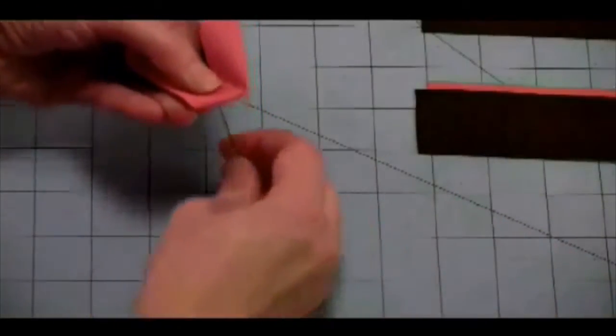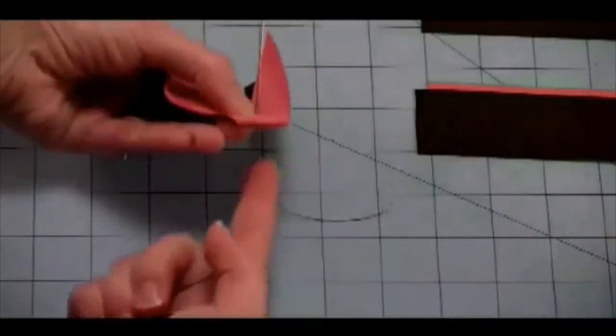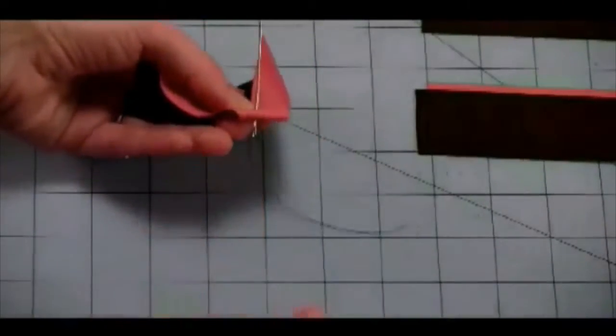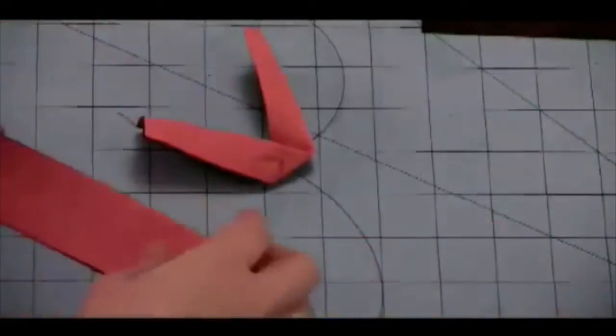I'm going to take this, put our needle right through the center there, getting all the layers, and put it down to the end of the needle. Now if you want, you can let it fall onto the string there too, that's just fine.